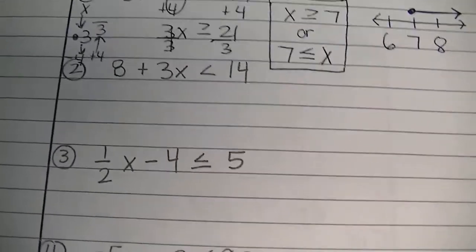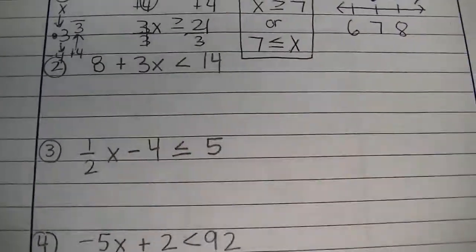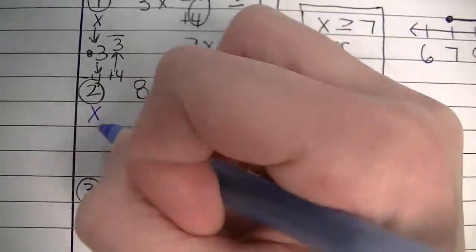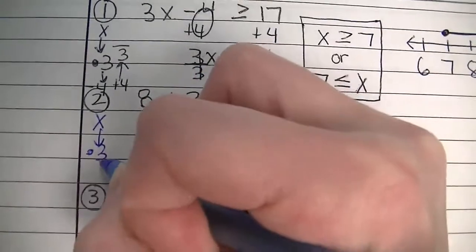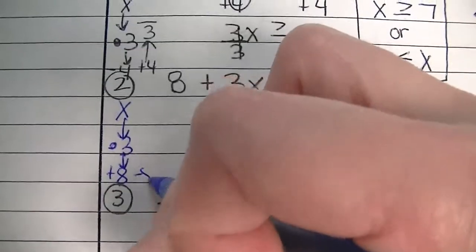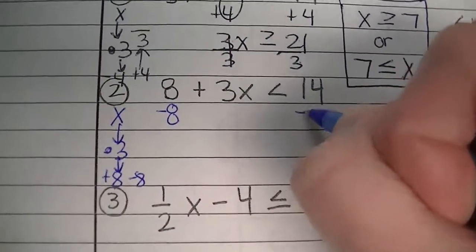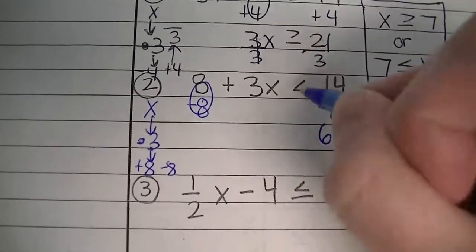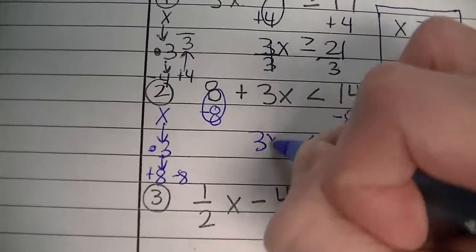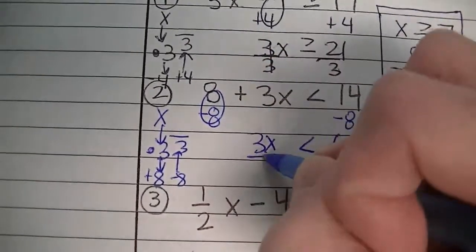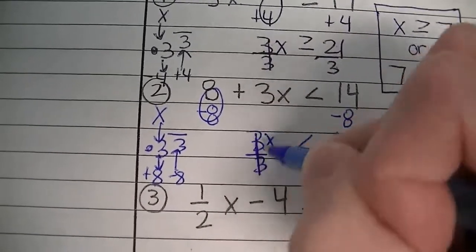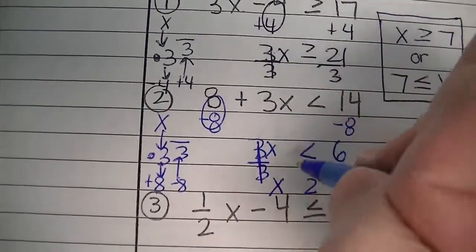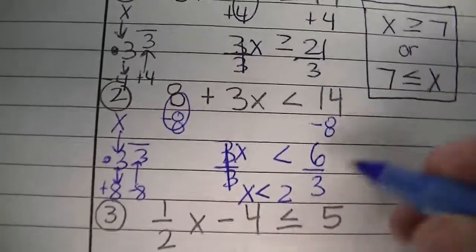Number 2: 8 plus 3 times x is less than 14. Build it — start with x, multiply by positive 3, then add 8. Inverse operation of adding 8 is to subtract 8 from both sides. That gives 0 on one side and 14 minus 8 equals 6 on the other. Bring down your inequality sign and your positive 3x. Inverse operation of multiplying by 3 is to divide by 3. 3 divided by 3 is 1, 1 times x is x. 6 divided by 3 is 2. We did not multiply or divide by a negative, so don't reverse the sign.